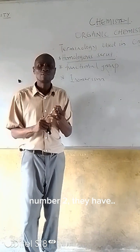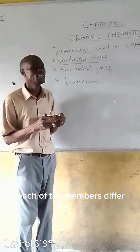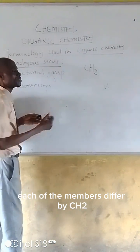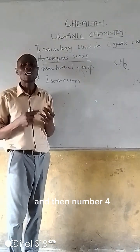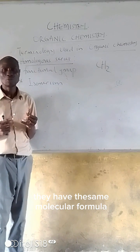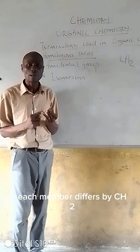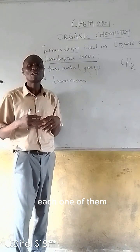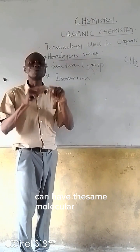Number two, each of the members is divided by CH2. The members of the same series are divided by CH2. And number three, they have the same general molecular formula. So let's recap: they have the same method of preparation, each member differs by CH2, and each one of them has the same general molecular formula.